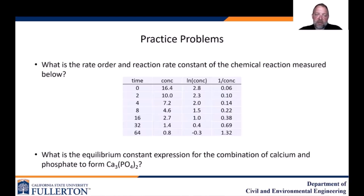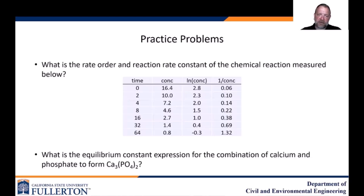Here are some practice problems. Take the provided data and figure out the reaction order by plotting concentration versus time, natural log of concentration versus time, and one over concentration versus time — whichever gives a straight line tells you the order. Don't forget to also find the rate constant k. The last question asks for the equilibrium constant expression Keq for the combination of calcium and phosphate to form calcium phosphate. I hope this was useful — you'll be using this information in your future classes.